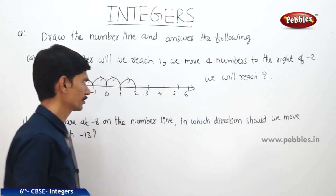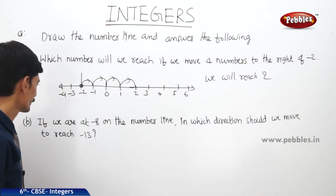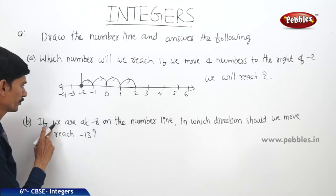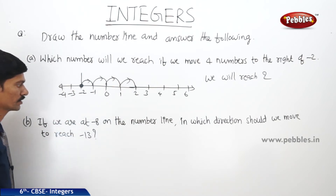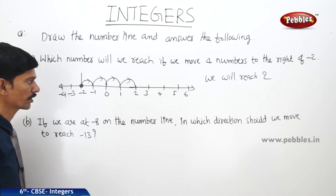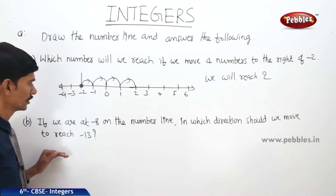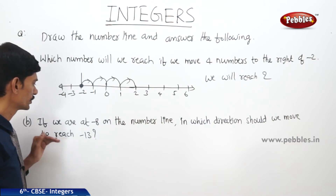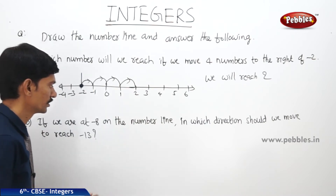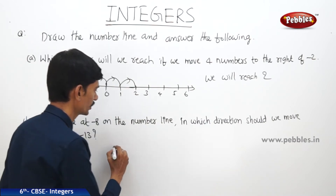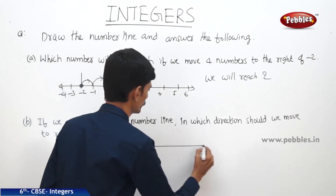The next question: if we are at minus 8 on the number line, in which direction should we move to reach minus 13? Let us draw the number line.